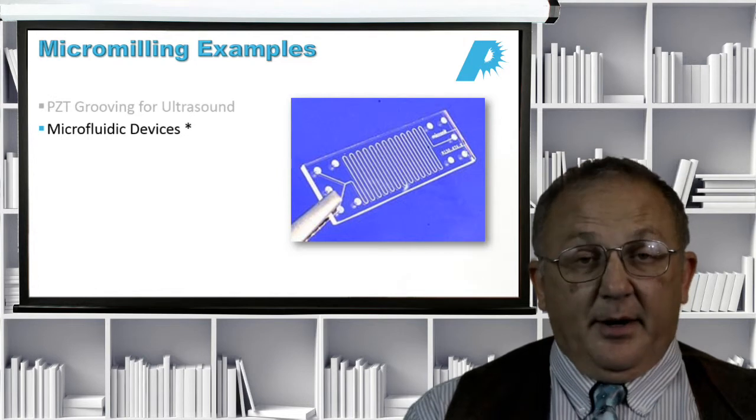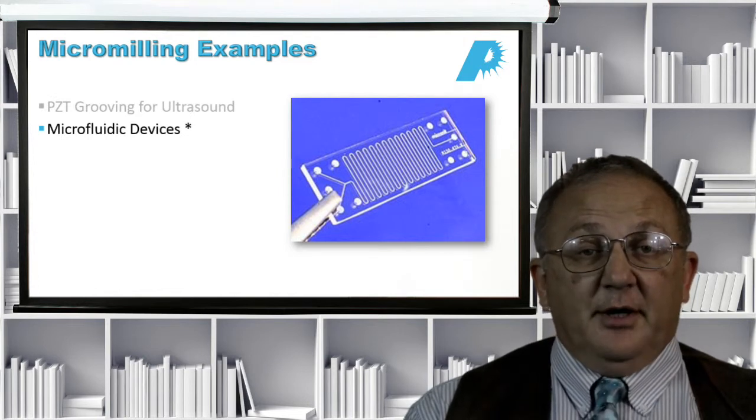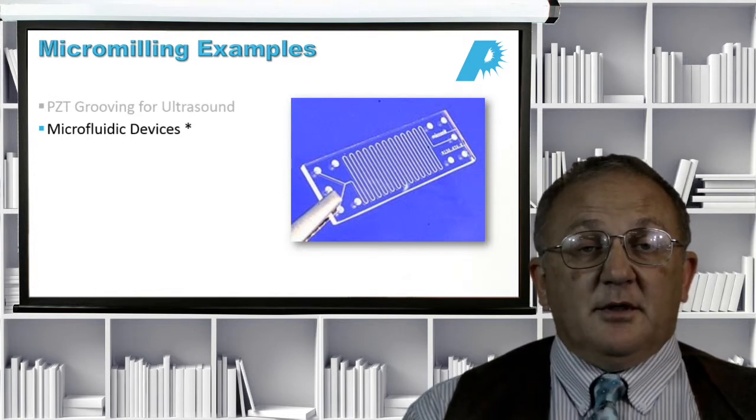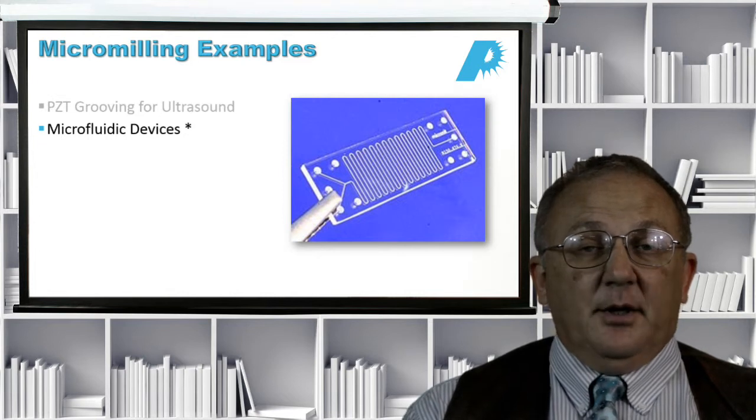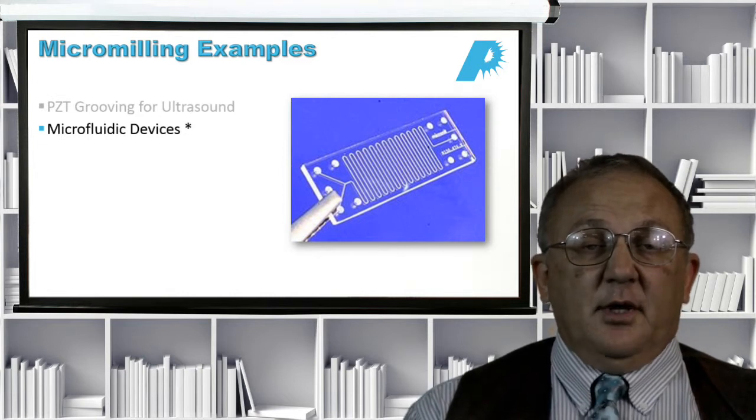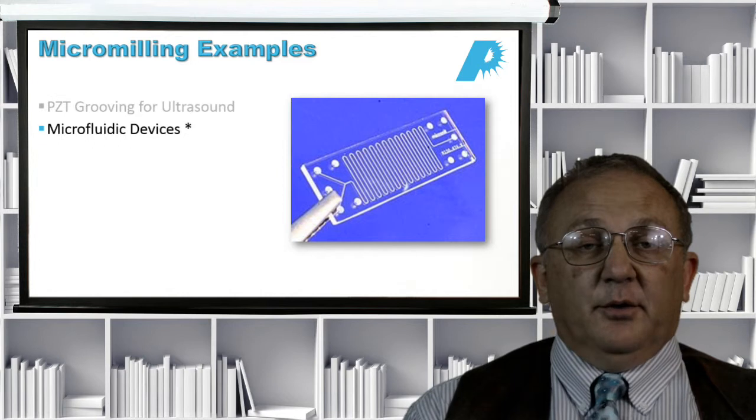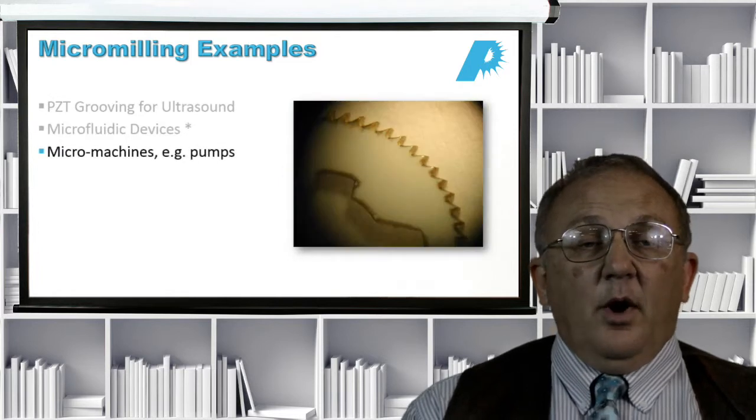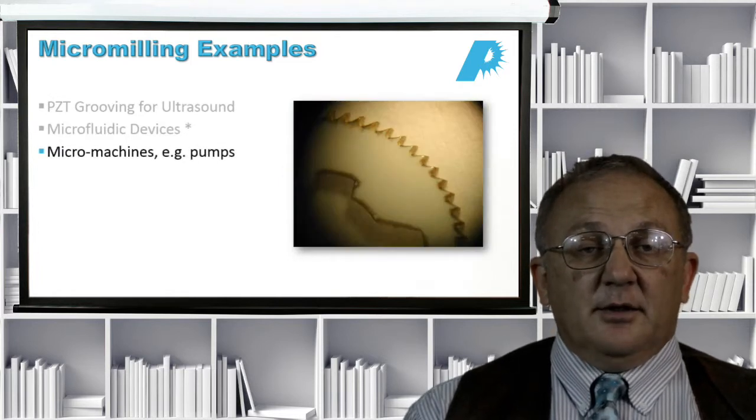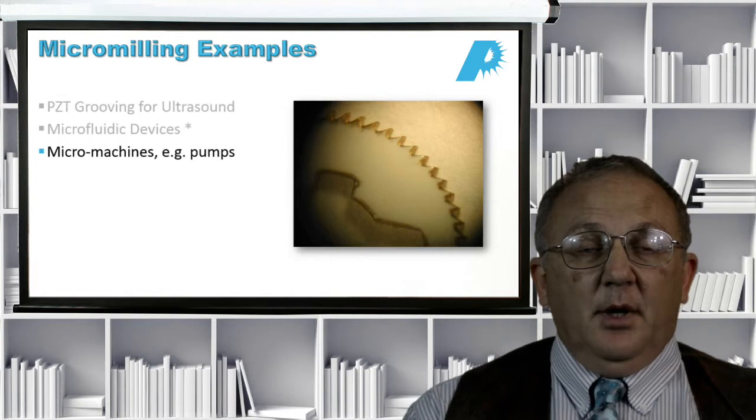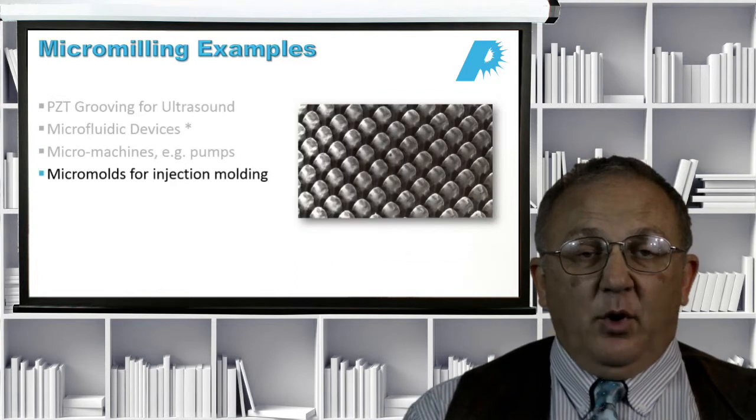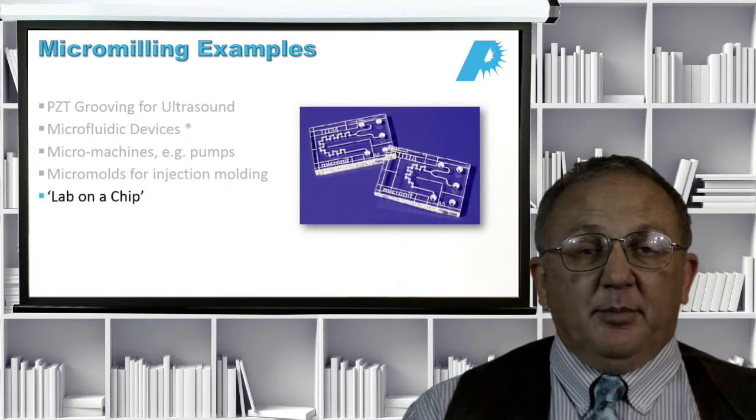Most of this is done in exotic materials like glass. Some, of course, is done in plastic. But a lot of the microfluidics are done in glass. And this is a challenging material to work with for other manufacturing methods. We also can work on micro-machines, for instance, pumps like insulin pumps. Micro-molds for injection molding. Lab-on-a-chip devices.